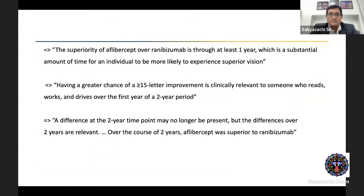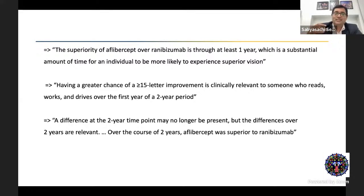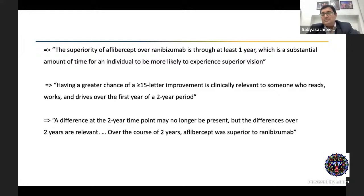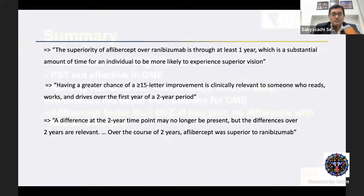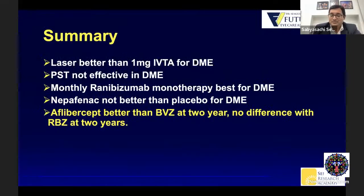The superiority of aflibercept over ranibizumab is true through at least one year — a substantial amount of time for an individual to experience superior vision. Aflibercept patients will see better much earlier than ranibizumab patients, even if the outcomes even out at two years. In the group with 6/12 and better vision at baseline, there was really no difference — bevacizumab did as well as ranibizumab and aflibercept. So Protocol T concluded: aflibercept is better than bevacizumab at two years; no difference with ranibizumab at two years; but at one year it was definitively better, especially in the subgroup with 6/18 and worse vision.